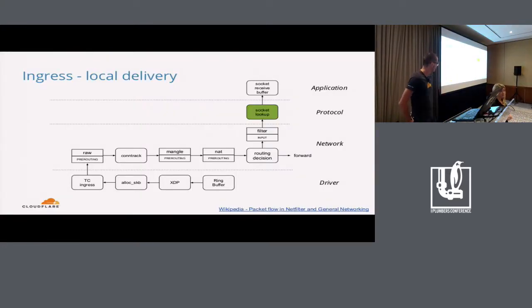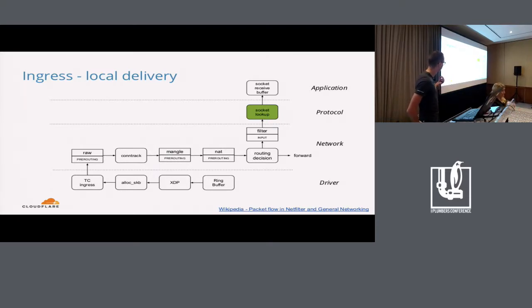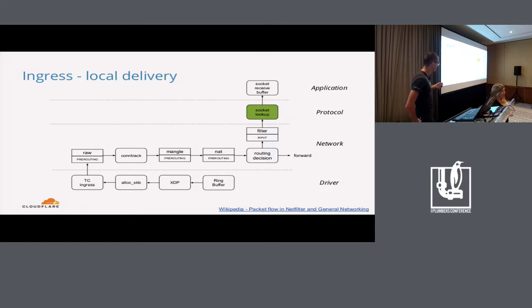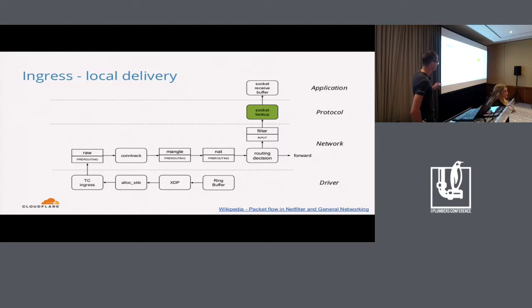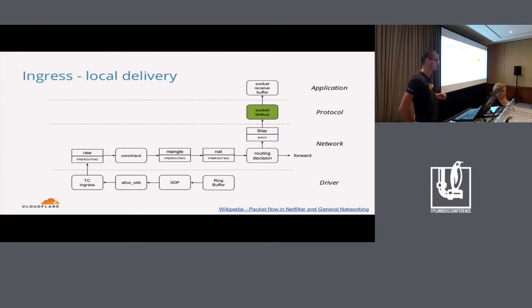Let's set some context first. For our application to actually receive a packet, we need to go all the way through the ingress path and end up with local delivery. We start at the NIC ring buffer, go past the XDP hooks, undergo ingress policing by traffic control. Then we need to hit a bunch of netfilter hooks that can drop the packet, finally make a routing decision for local delivery, filter some more, and then pass it to the protocol so that it can look for a suitable socket to accept the packet. The socket lookup is what we are finding most limiting for our use cases and are trying to extend.